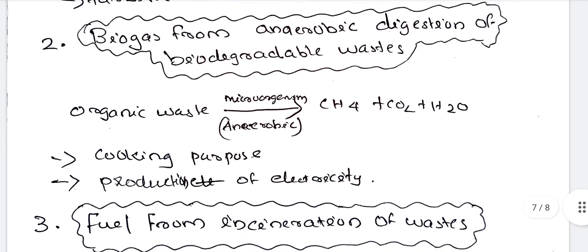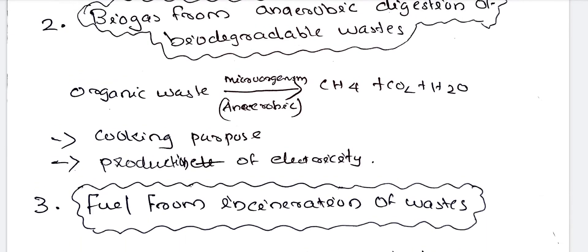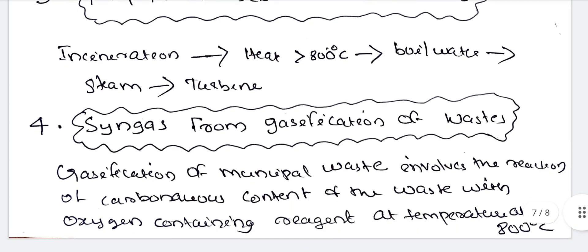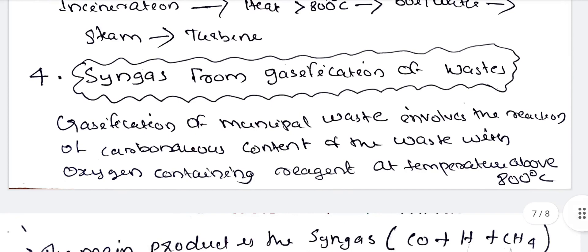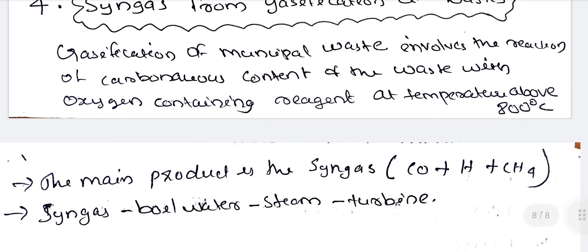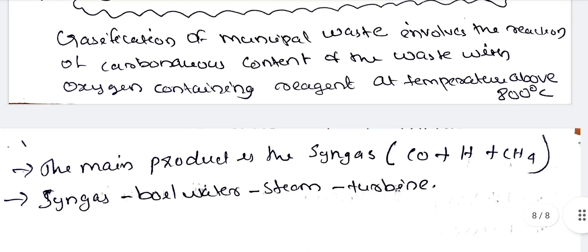Biogas from anaerobic digestion of biodegradable wastes. Fuel from incineration of wastes — thermal heat is generated and steam is produced in air turbines. Syngas from gasification of wastes — gasification of municipal waste involves reaction of carbonaceous content with an oxygen-containing reagent at temperatures above 800 degrees Celsius.